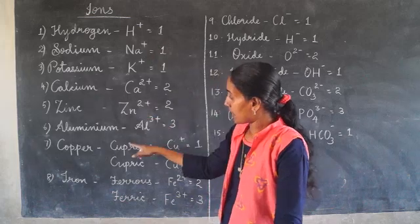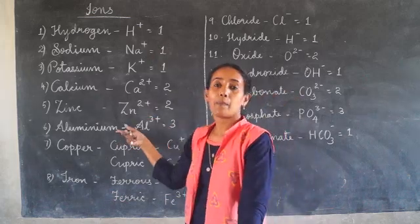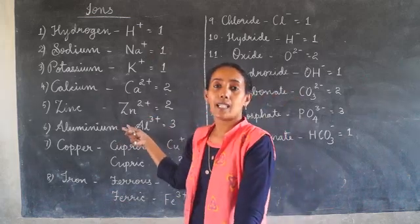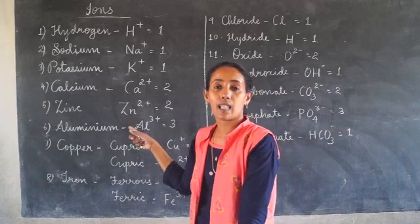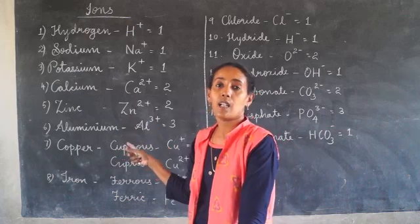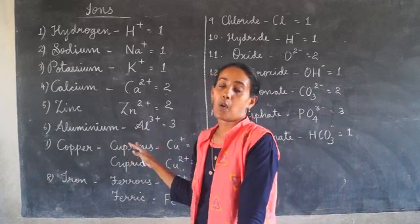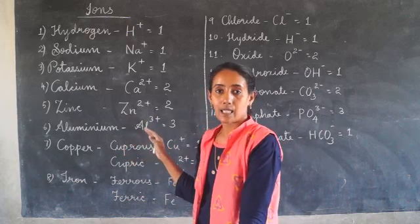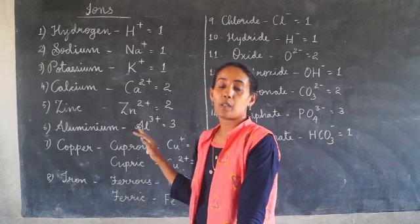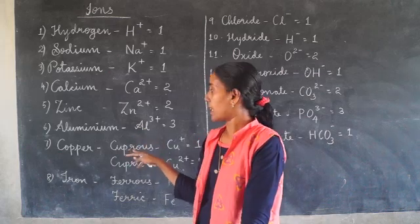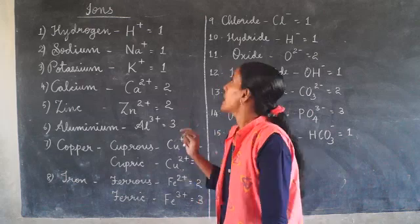Similarly, aluminium. Aluminium's outer shell contains 3 electrons. It can lose those 3 electrons to become the aluminium ion. Aluminium becomes stable only if it loses those 3 electrons. So the valency of aluminium is 3.